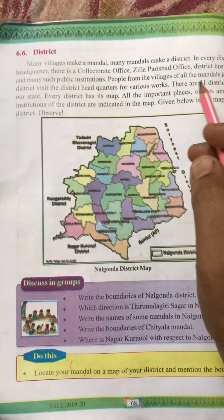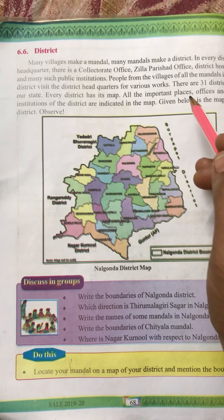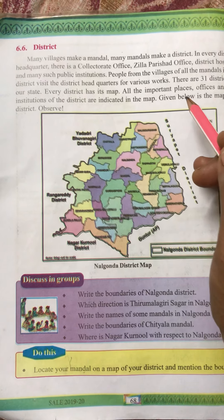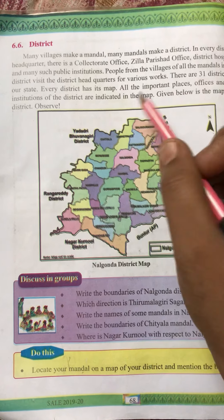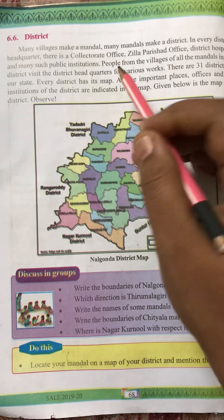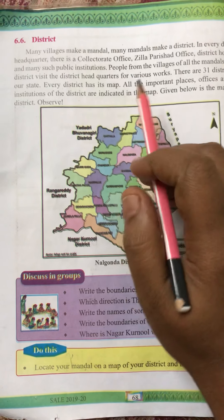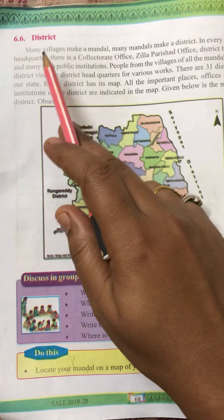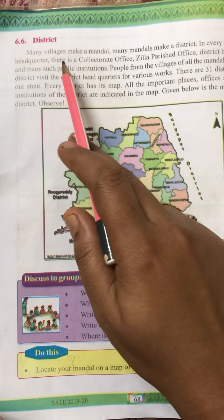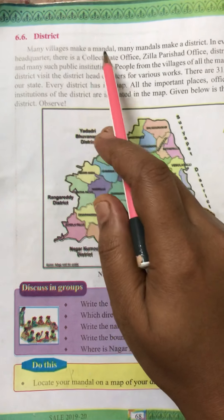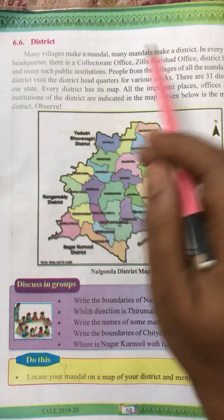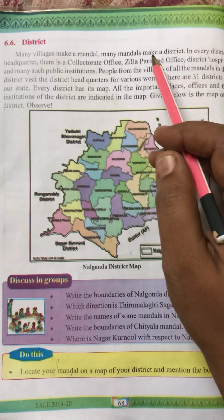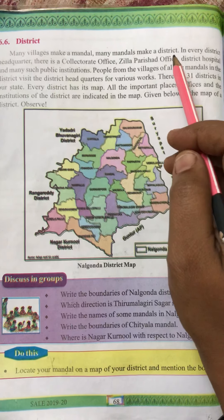Good morning children. We are in the 'Find the Way' lesson. In the last class we have seen about mandal. Now we'll come to know about districts. Many villages make a mandal, and many mandals make a district.